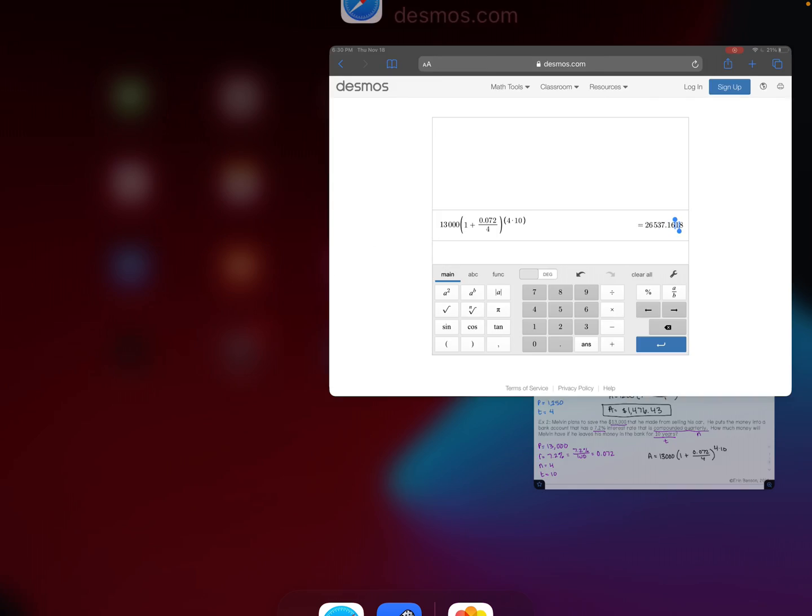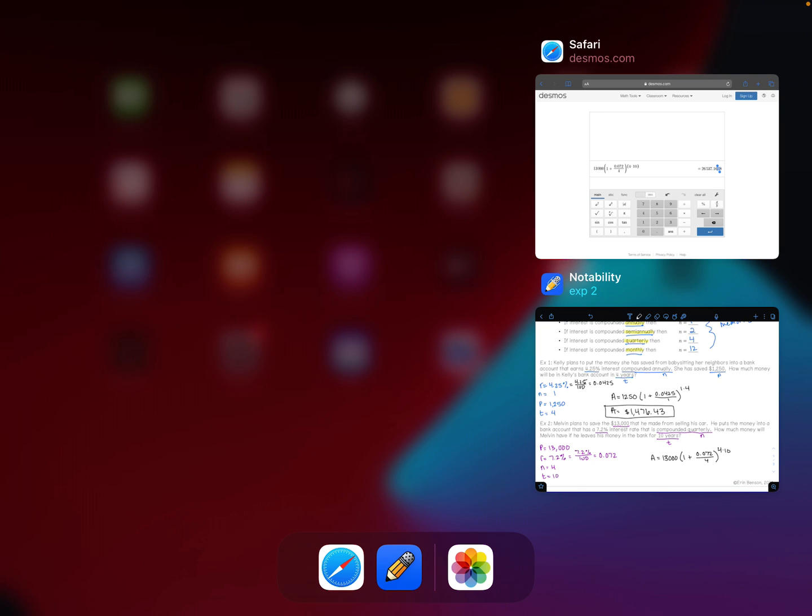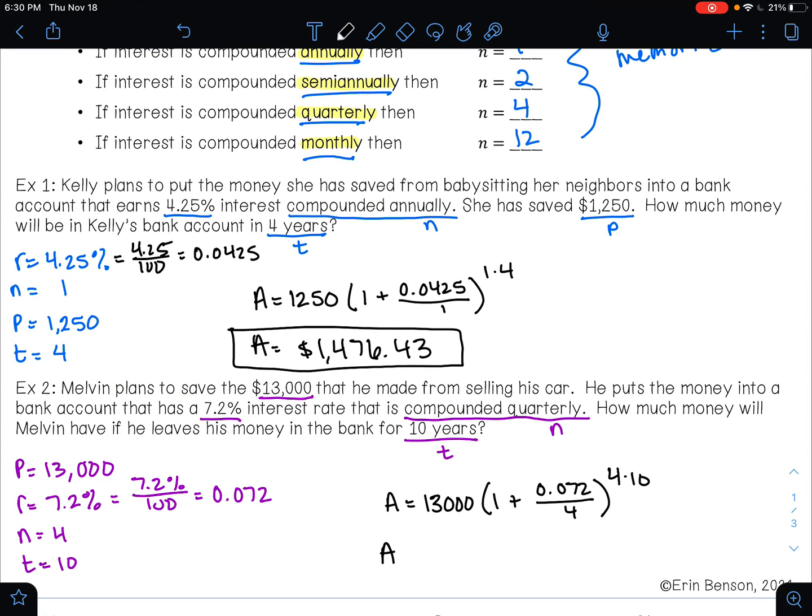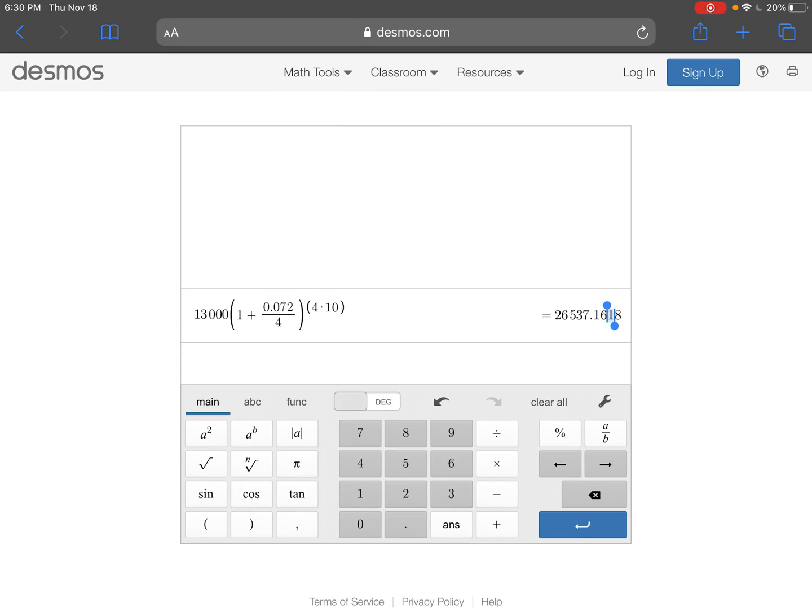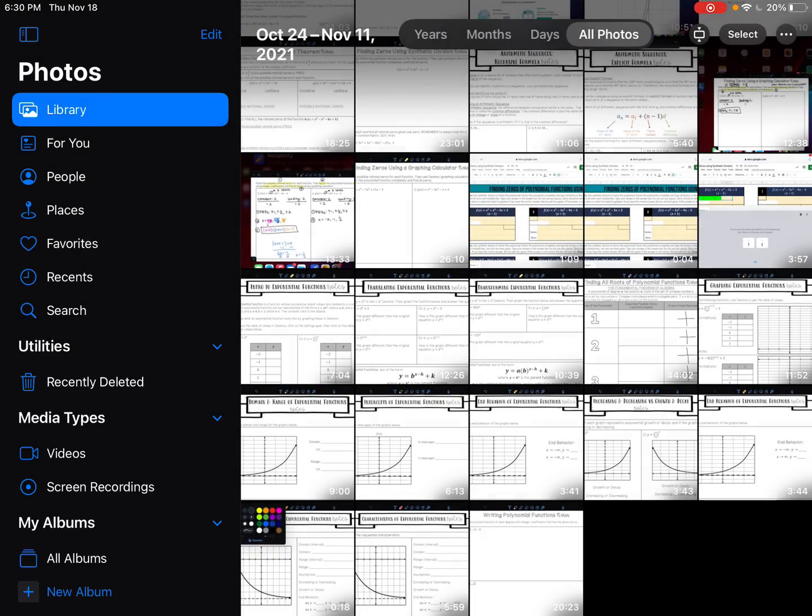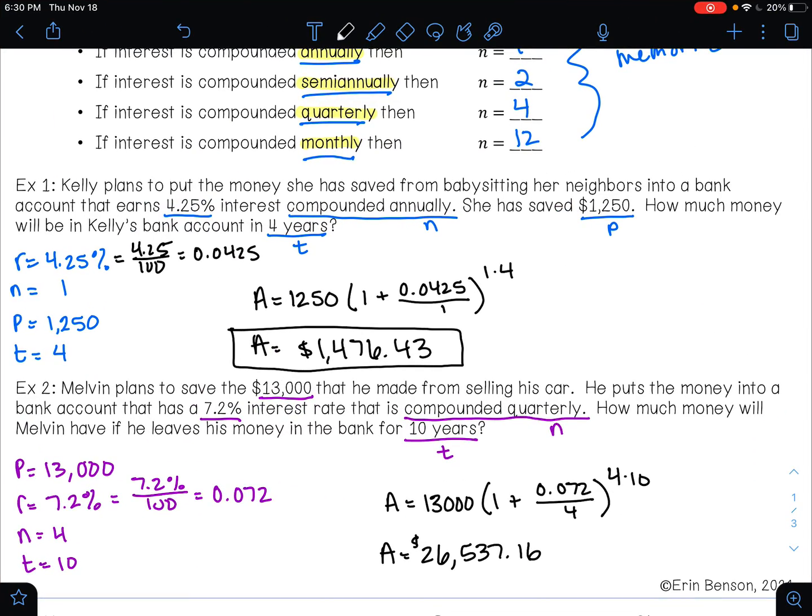Way to go, Melvin. Way to make an investment. $26,537.16. Melvin more than doubled his money here. And that is amazing. Again, this is why you want to learn about compound interest so that you can invest your money wisely when you choose to open a bank account and give a bank your business.